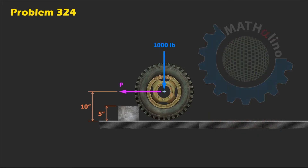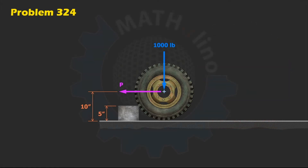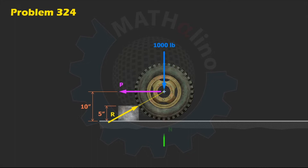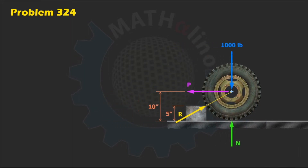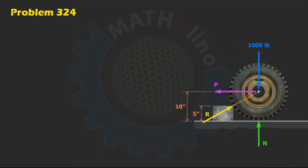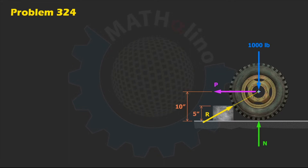Let's go back to our problem. The block will have a reaction — let us call that R — in the direction towards the center of the wheel, and we have a normal force N at the floor. This problem is interesting, especially the second part where we are required to find the minimum value of force P to start the wheel over the block.